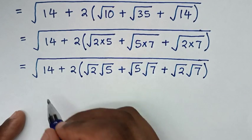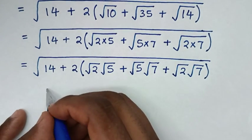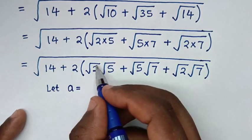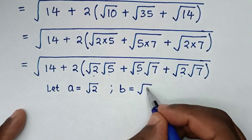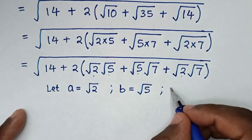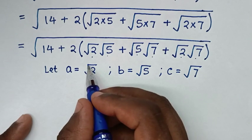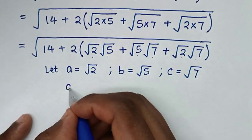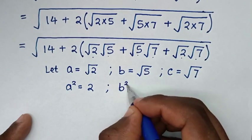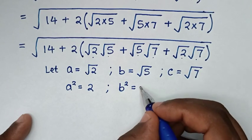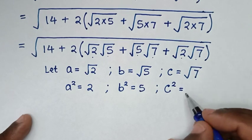Then in the next step, square root of 2 is common, square root of 5 is common, and square root of 7 is common. So we let A equal to square root of 2, B equal to square root of 5, and C equal to square root of 7. Then to remove these square roots we square both sides: A squared equals 2, B squared equals 5, and C squared equals 7.